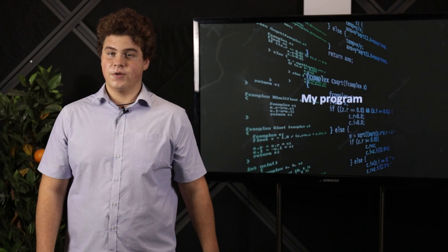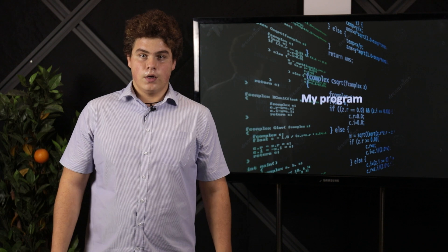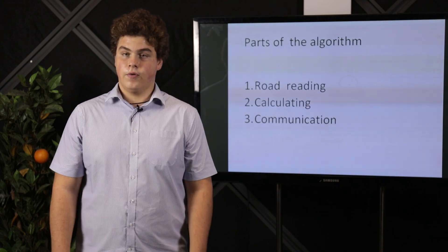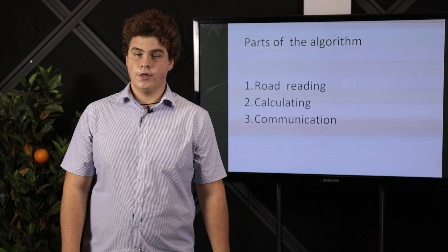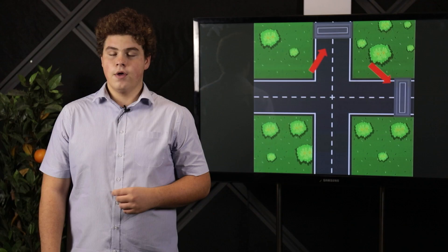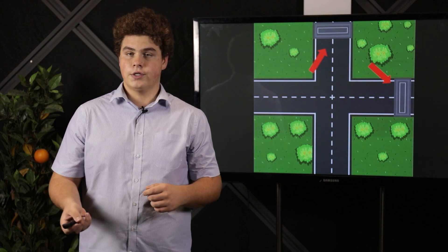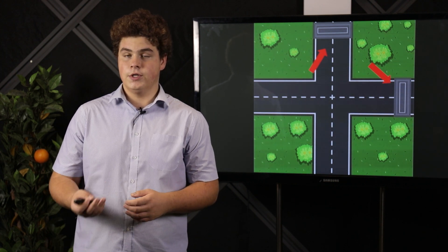Moreover, cars don't even do useful work while they stand. So, my program is divided into three different but connected parts. First of all, mass strips on the road. These strips detect cars — their number, their speeds, and their masses — and they translate this information to a computer. This step is needed for the further steps.